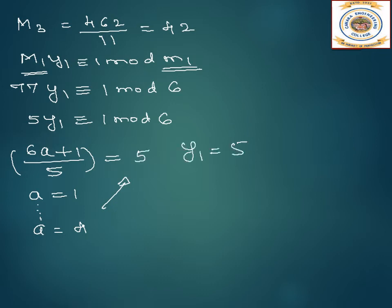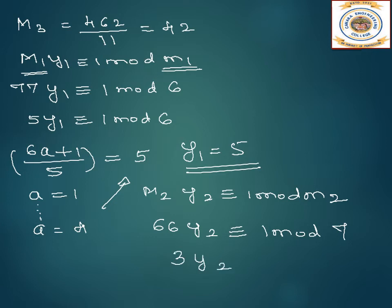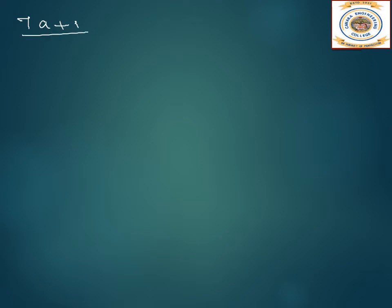Therefore y1 equals 5. Next, M2·y2 ≡ 1 mod m2. Capital M2 is 66 and y2 ≡ 1 mod 7. Since 66 is greater than 7, we do 66 mod 7, which gives 3. So 3·y2 ≡ 1 mod 7. Writing (7a + 1) / 3, when a equals 2 we get 5. Therefore y2 equals 5.